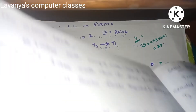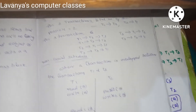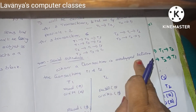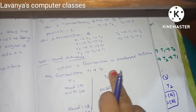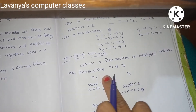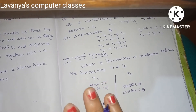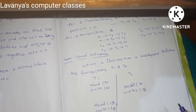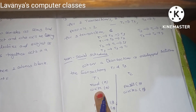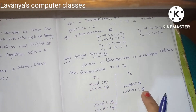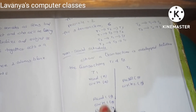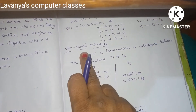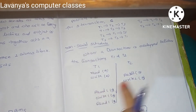Non-serial scheduling means there is overlap between transactions T1 and T2. It is not continuous — not one after another. You are executing transaction T1, and then without completing T1, you start T2, then again T1. This overlapping between one transaction and another is called a non-serial schedule.